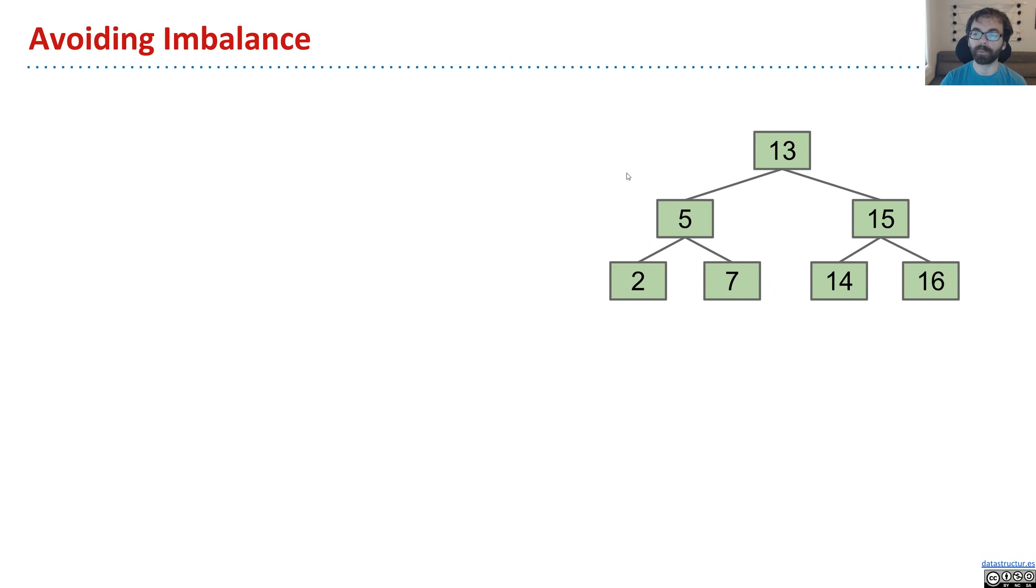So let's say we have a nice, beautiful, bushy tree like this. And we have new items coming in, 17, 18, 19. And if we just add them as if this is a normal binary search tree, we'd have 16, 17, 18, 19. And the tree starts getting spindly.